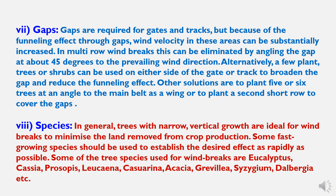The seventh characteristic is gaps. Gaps are required for gates and tracks, but because of the funneling effect, wind velocity in these areas can be substantially increased. In multi-row windbreaks, this can be eliminated by angling the gap at about 45 degrees to the prevailing wind direction. Alternatively, a few planted trees or shrubs on either side of the gate or track can broaden the gap and reduce the funneling effect. Other solutions include planting five or six trees at an angle to the main belt.